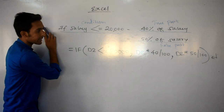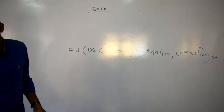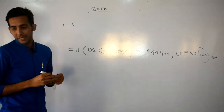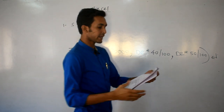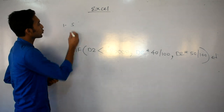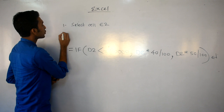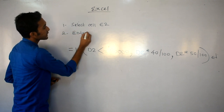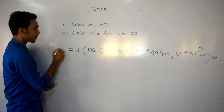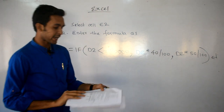लेकिन सिर्फ formula नहीं लिखना — पूरा answer लिखना होगा। Steps इस प्रकार होंगे: Step 1 — bonus find करना है E2 में, तो लिखिये: Select cell E2. Step 2 — Enter the formula as: =IF(D2<=20000, D2*40/100, D2*50/100). Step 3 — formula लिखना होगा।